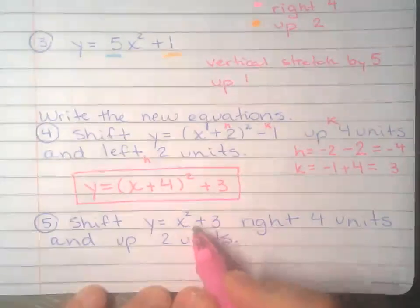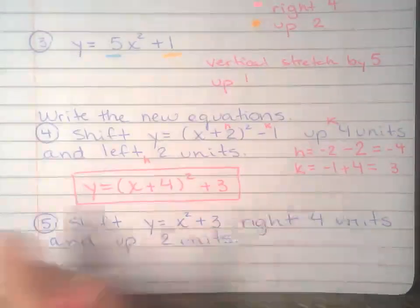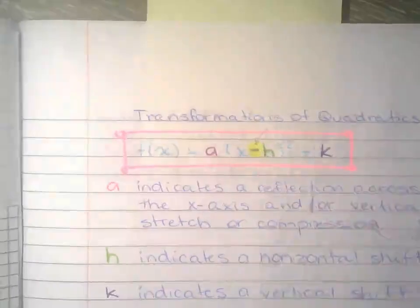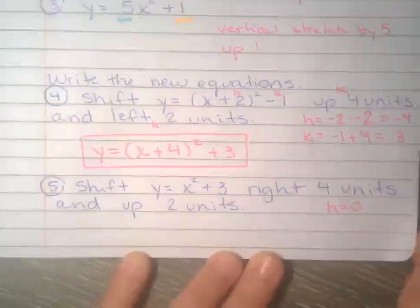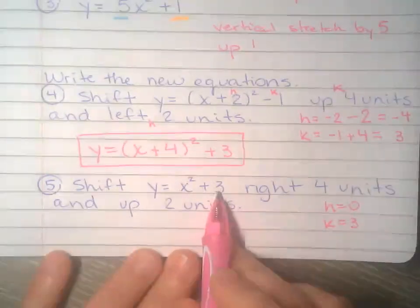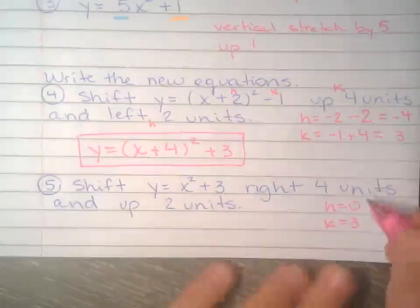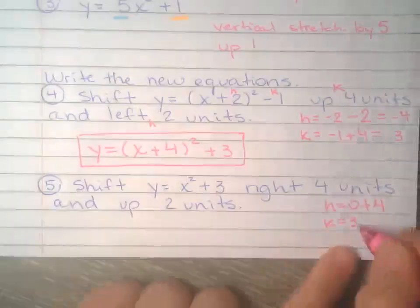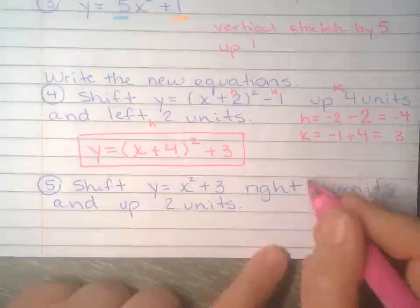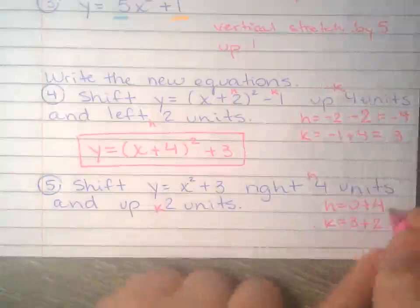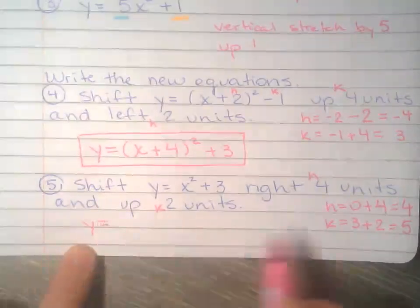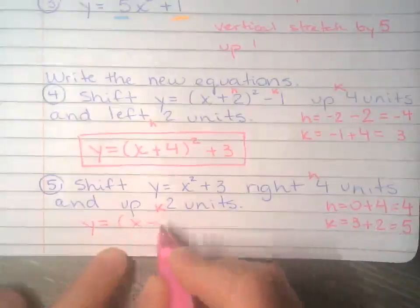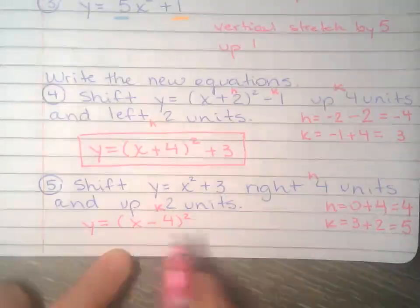One more. This one does not have h. Like you don't have anything in parentheses right there. H is the number in parentheses, but you don't have that. So you can just say, you don't have h. That means h is zero. So h was zero. And k is three. Right there. I need to move right four. And I need to move up two. Again, side to side is h. Up and down is k. Zero plus four. Three plus two. Put it back. So y equals h now is four. So x minus four squared. This minus is from the formula again. And then plus five.